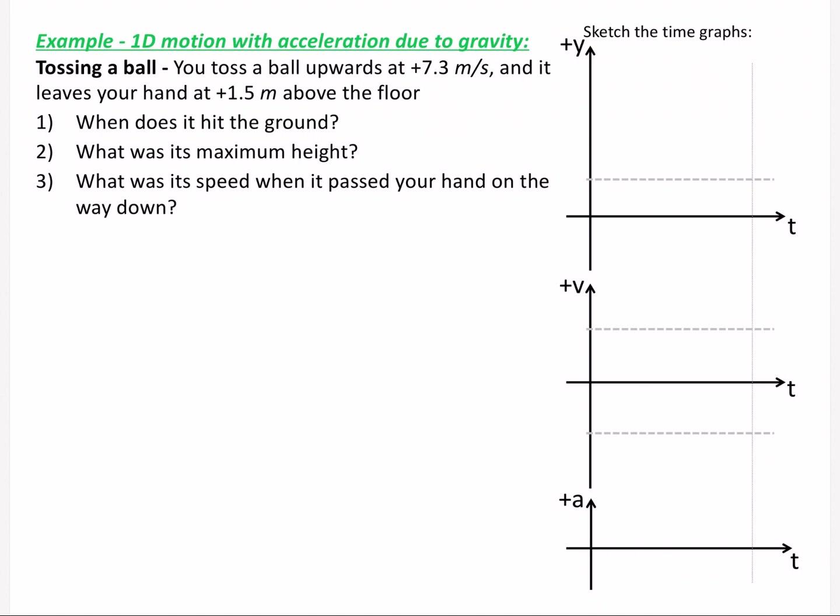This is a 3-part example of 1D motion with acceleration due to gravity. You toss a ball upwards at positive 7.3 meters per second and it leaves your hand at positive 1.5 meters above the floor. Part 1: When does it hit the ground? Part 2: What was its maximum height? Part 3: What was its speed when it passed your hand on the way down?